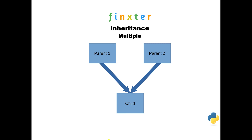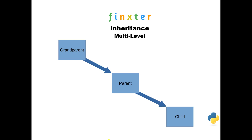With multiple inheritance, there are multiple parents — not just two, it could be as many as you wish — feeding down to a child or children. Multi-level is where you have a grandparent, parent, and child: the first class is the parent to a child, and that child becomes a parent to another child, giving you a grandparent-parent-child analogy, as with humans.